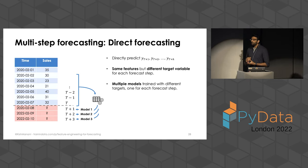Question: How do you deal with seasonality around the calendar, like Easter? Answer: That's something you typically just handle with a one-hot feature — you know, is Easter happening, it's easy. Or if you have a set of holidays you just say is_holiday equals 0 or 1 — that's a very easy way of dealing with those kinds of things. Thank you very much, Kishan. That's all we have time for, but I'm sure Kishan will be around for more questions.